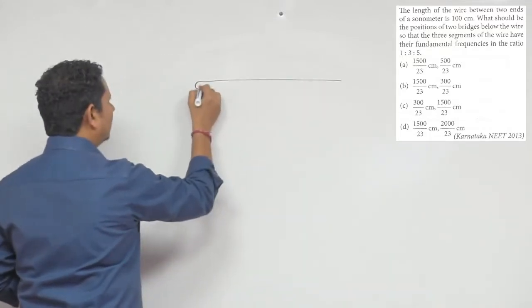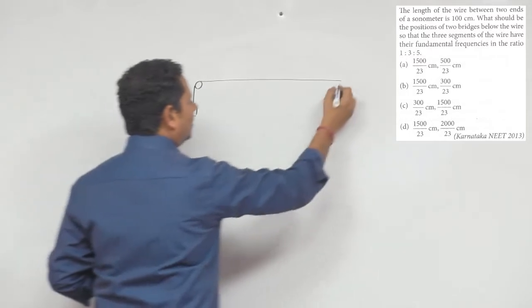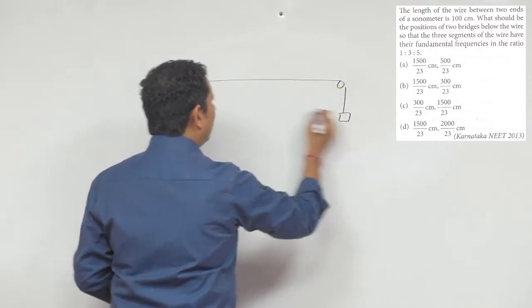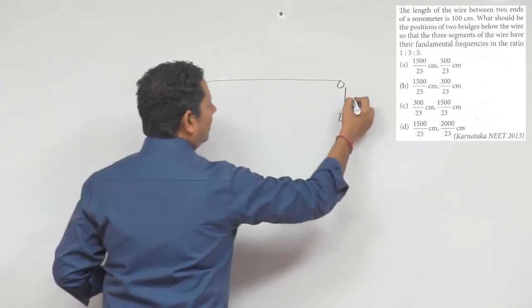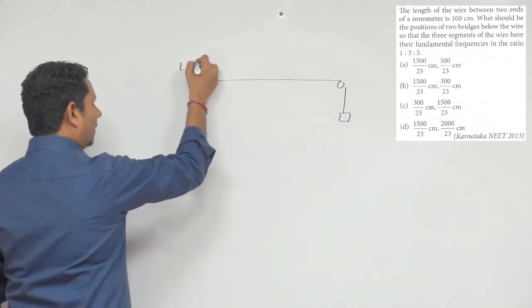So, this is your wire. Let us say this is a sonometer wire. This is how we have cleaned up. The length is 100 cm. So, this is the length of 100 cm.